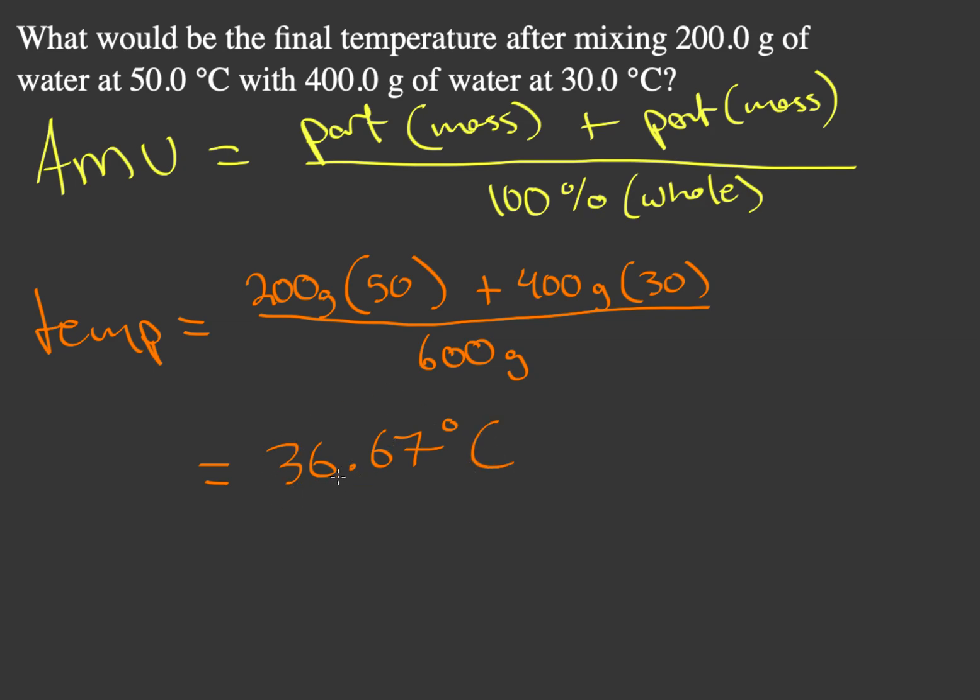So this is our average temperature. When we mix water together at different temperatures, they're going to come up to an average temperature. The way we calculate this is very similar to how we calculate our average atomic mass for an atom with different isotopes.